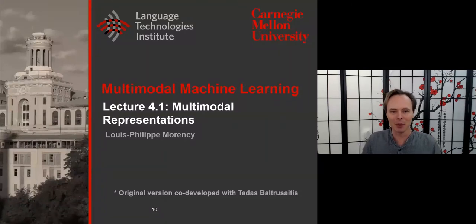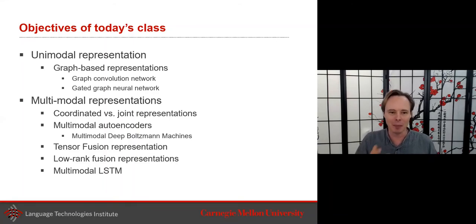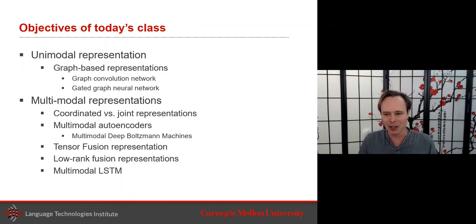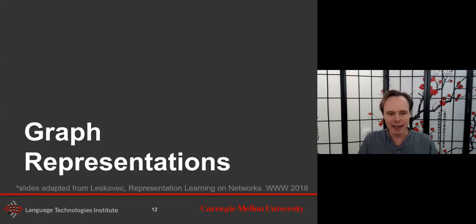Today our presentation is about multimodal representation. The focus today is primarily on multimodal representation — coordinated and joint representations. But I will also briefly discuss graph-based representation, since this was brought up several times in comments from lecture 2.1. People were asking about graph-based representations, so I'm happy to give more details and some pointers for those interested in reading more. I want to share that knowledge is one of the things we want to represent in a graph. There's a great tutorial from Professor Leskovec from Stanford on this topic, which I invite you to look at.